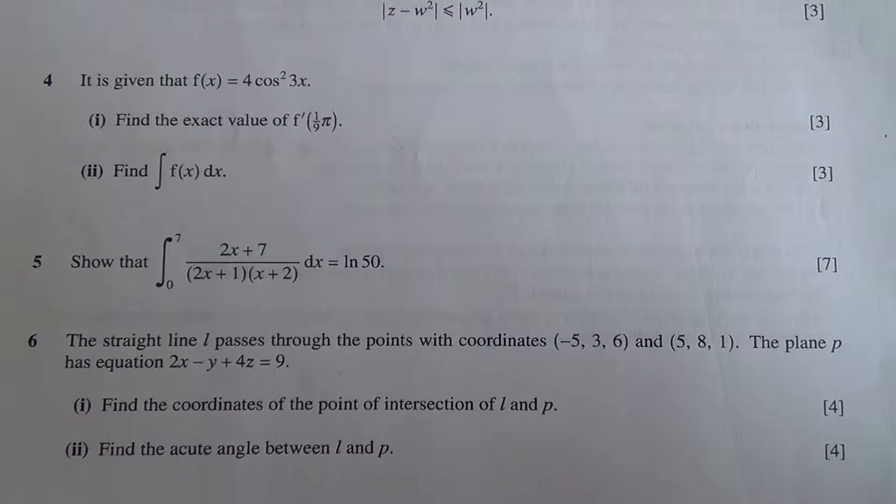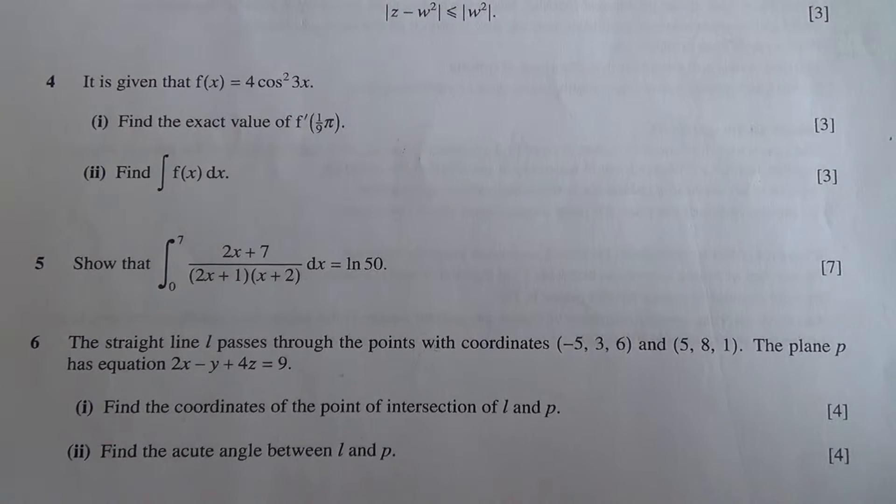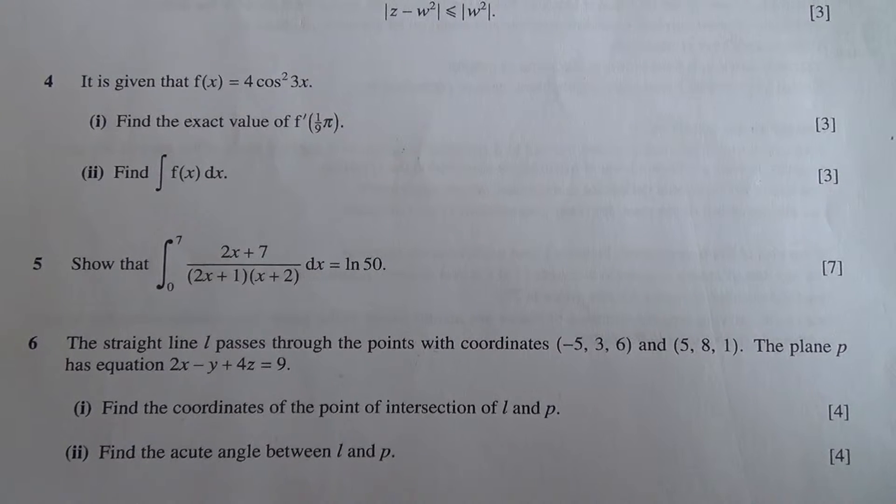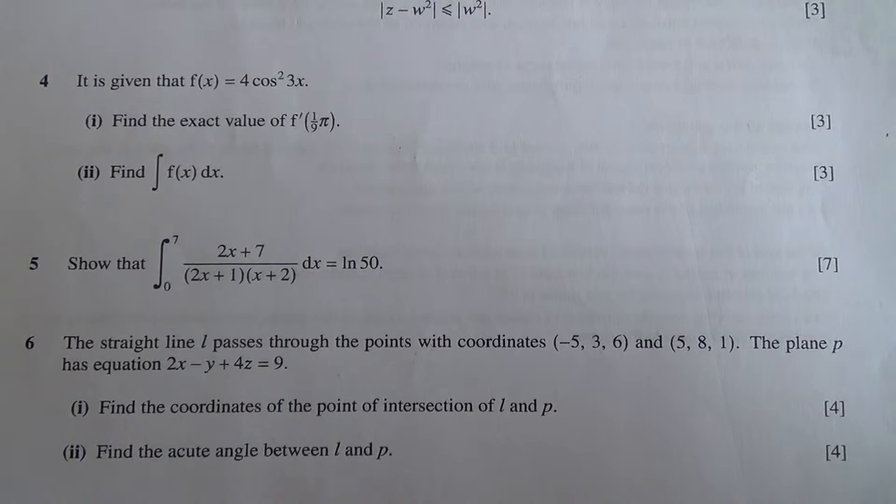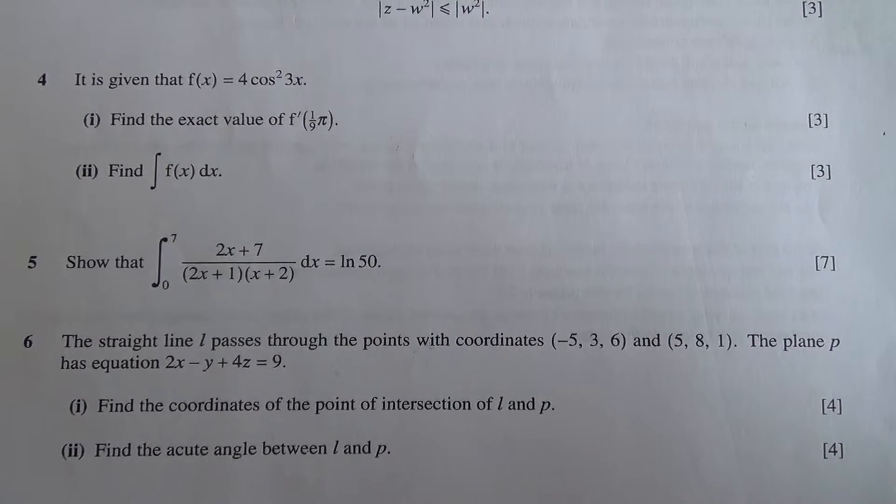Question number 5. Show that the integral of 2x plus 7 over 2x plus 1 in brackets times x plus 2 in brackets for limits from 0 to 7 is equal to ln 50.